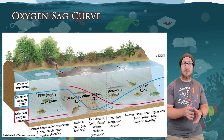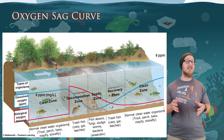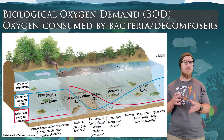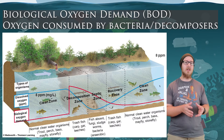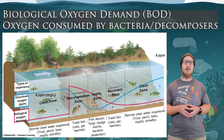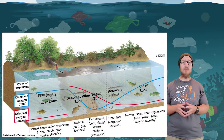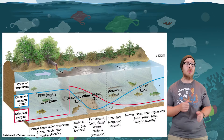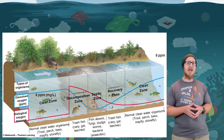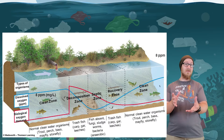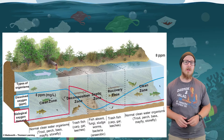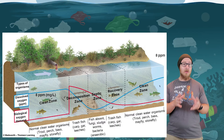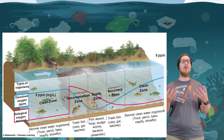We can plot dissolved oxygen levels versus distance from a source of nutrient pollution — especially in rivers — using an oxygen sag curve. Biological oxygen demand (BOD) represents the amount of oxygen consumed by bacteria and microorganisms as they decompose organic matter. Before a discharge of nutrients, BOD is low and dissolved oxygen is high. At the source of discharge, there's a sharp increase in BOD as microorganisms consume dissolved oxygen, causing it to decrease. Farther away, there's less material to decompose, so BOD plummets and dissolved oxygen begins to increase before we reach a clear zone again.